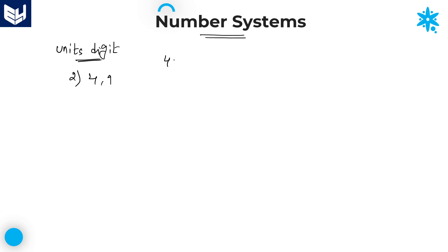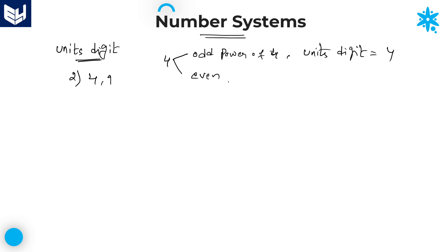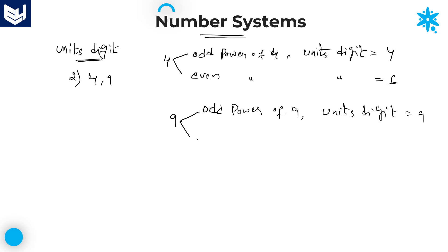Just a quick recap of the previous session: if a number is ending with 4, for odd power of 4 the units digit is 4, and for even power of 4 the units digit is 6. If a number is ending with 9, for odd power of 9 the units digit is 9, and for even power of 9 the units digit is 1.